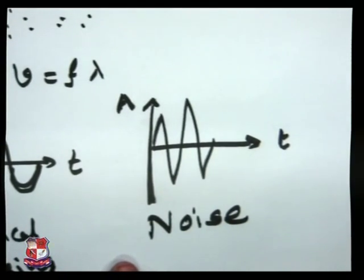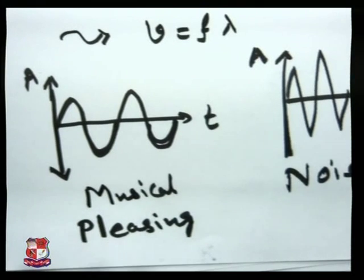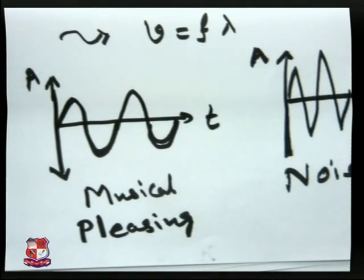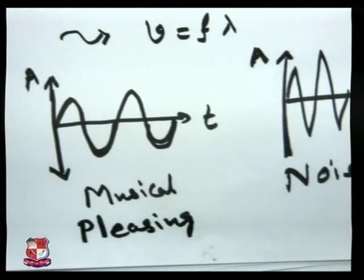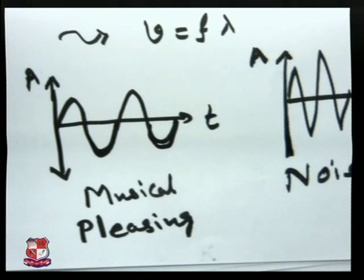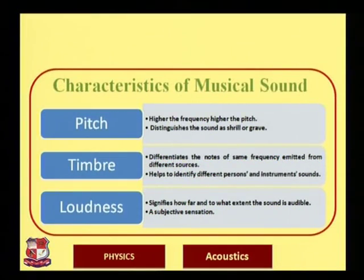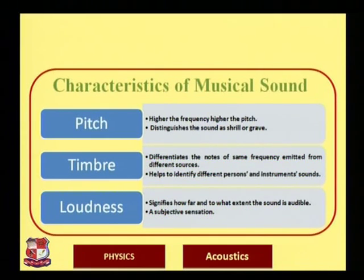In architectural acoustics we deal with musical sound, and we deal with noise in order to remove it — trying to enhance sound quality. Musical sound has three major characteristics: pitch, timbre, and loudness. These apply to any sound, whether spoken by a teacher, a family member, or heard in a movie song. Pitch is a frequency-dependent quantity — higher the pitch, higher the frequency, and vice versa.